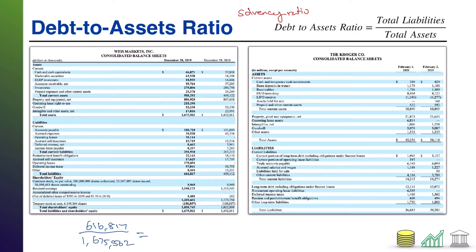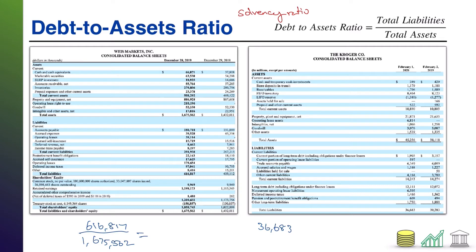If we look over at Kroger, total liabilities, we have 36,683. The two companies are scaled differently — Weiss is scaled in thousands, Kroger is scaled in millions, so that's why the numbers look a little different. We've got total assets of 45,256.